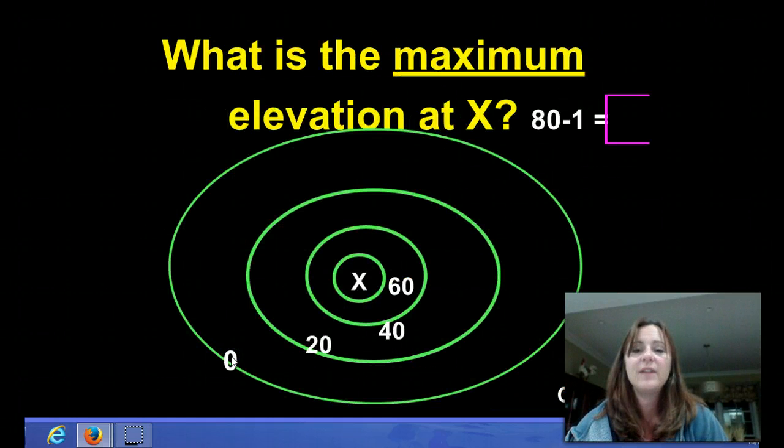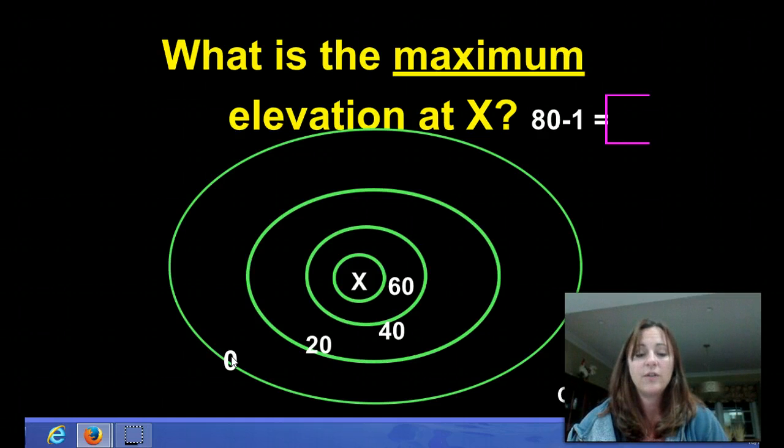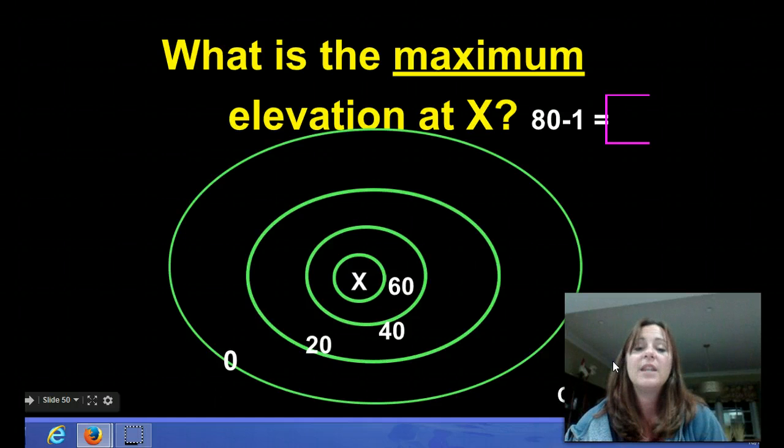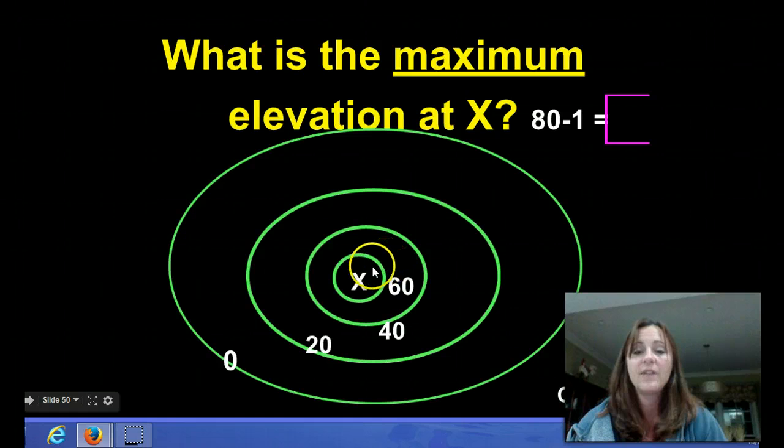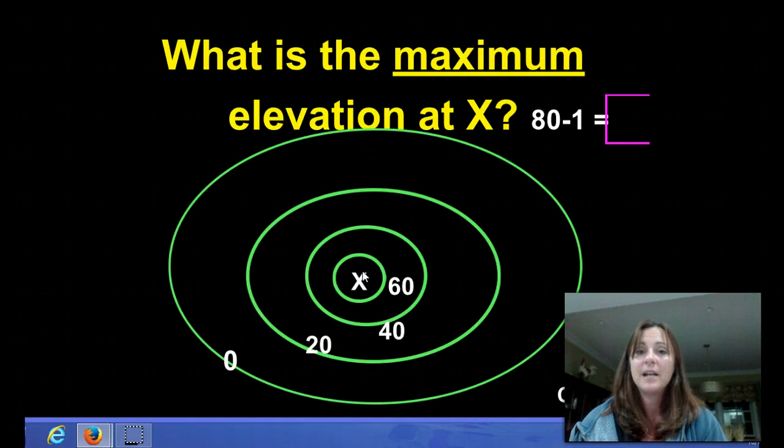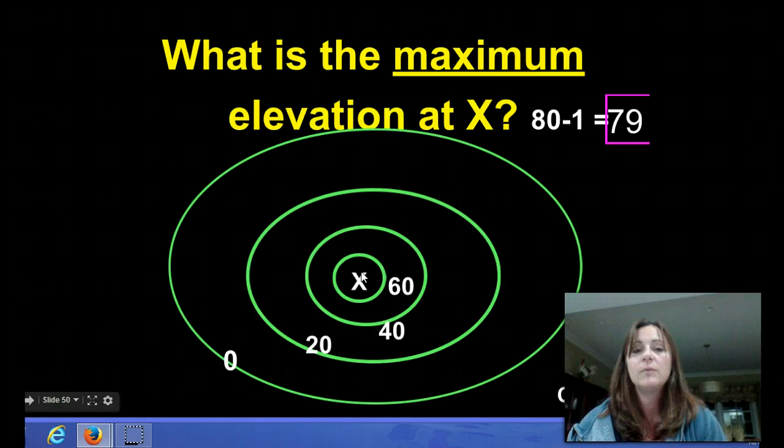So what's the maximum elevation at X? Well, again, we look for our contour interval. Here, our contour interval is 20. We would next think to ourselves, what would the next contour line be of the highest elevation? Here it would be 80. So we do 80 minus 1 and we have 79. 79 would be the most or highest possible elevation or maximum elevation.